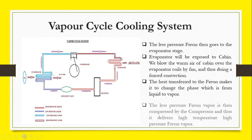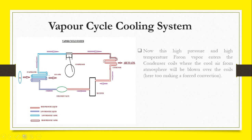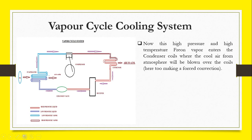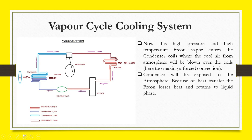The heat transferred to the Freon makes it change phase from liquid to vapor. The less pressure Freon vapor is then compressed by the compressor and thus it delivers high temperature, high pressure Freon vapor. This high pressure and high temperature Freon vapor enters the condenser coil where cool air from the atmosphere will be blown over the coils. Because of heat transfer, the Freon loses heat and returns to liquid phase.